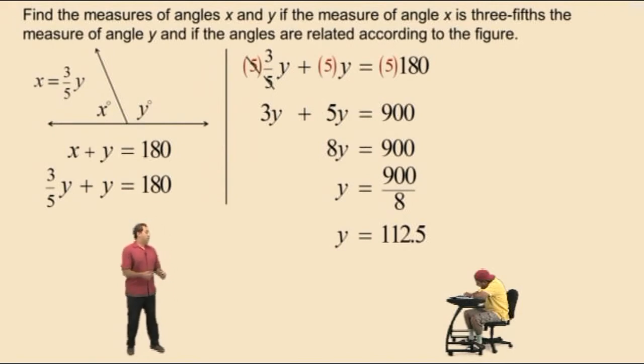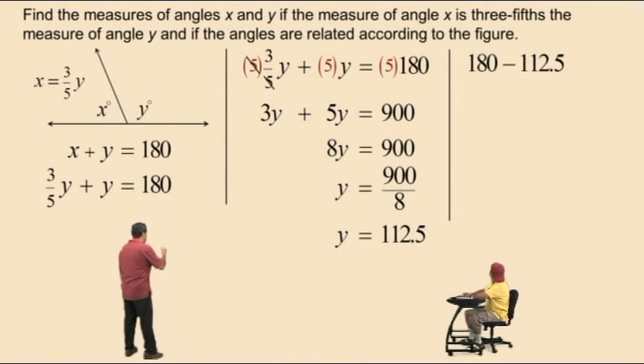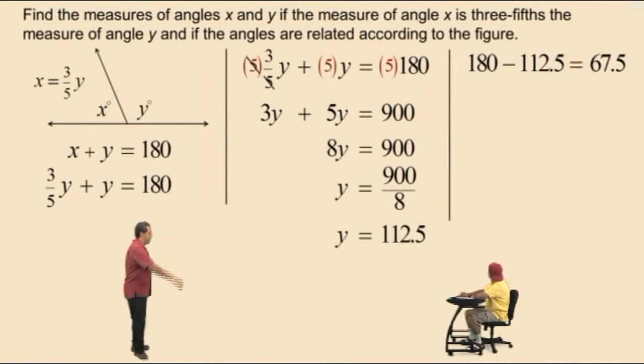Now, that is our y value. So, to get x, we'll take 180 and subtract 112.5, which gives us what, Charlie? 67.5. That's right.